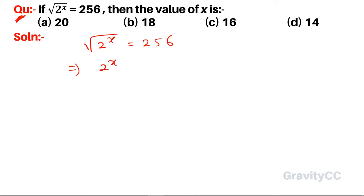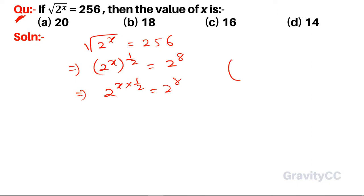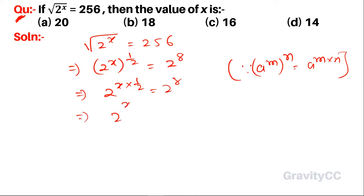We write root 2 as 2 to the power 1 upon 2, and 256 is factored as 2 to the power 8. Using the exponent rule, a to the power m to the power n, we get 2 to the power x upon 2.